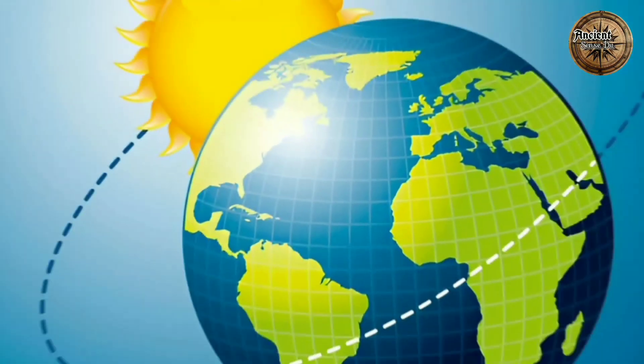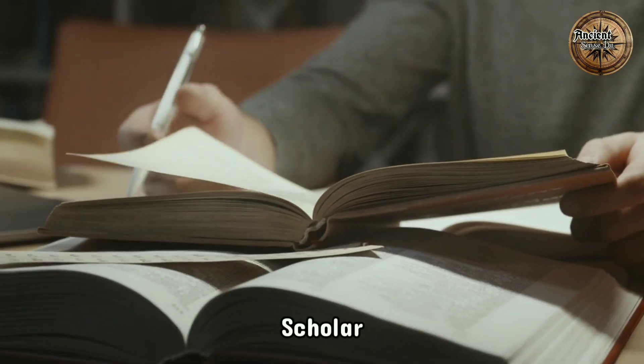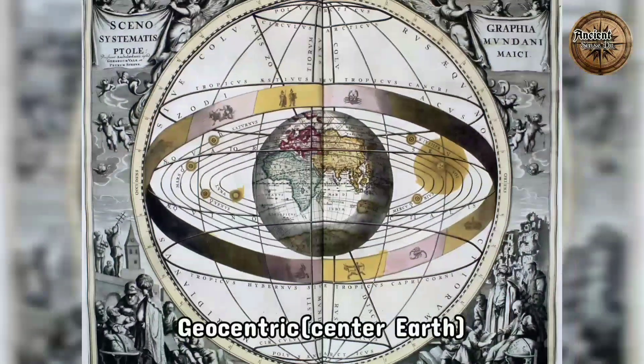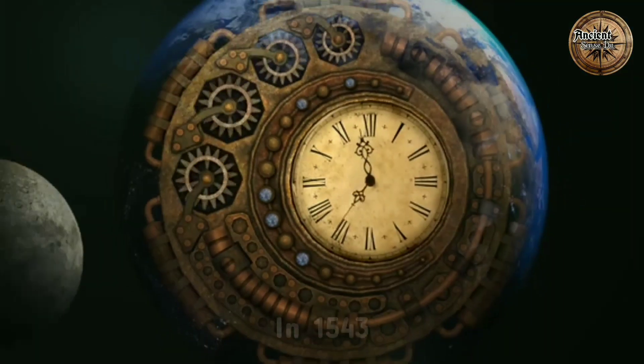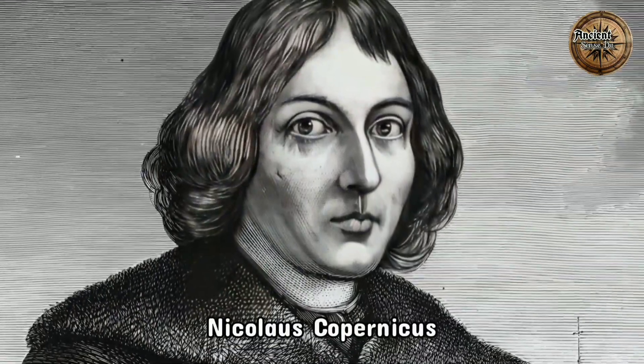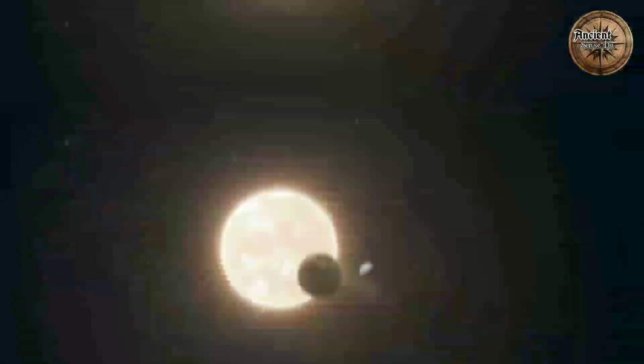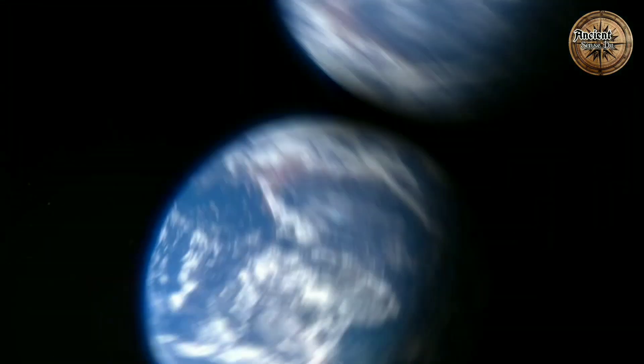Many believed the sun revolved around the Earth, with the ancient Greek scholar Ptolemy formalizing this geocentric model in 150 BC. Then in 1543, Nicolaus Copernicus described a heliocentric model of the solar system. And in 1610, Galileo Galilei's discovery of Jupiter's moons confirmed that not all heavenly bodies circled Earth.